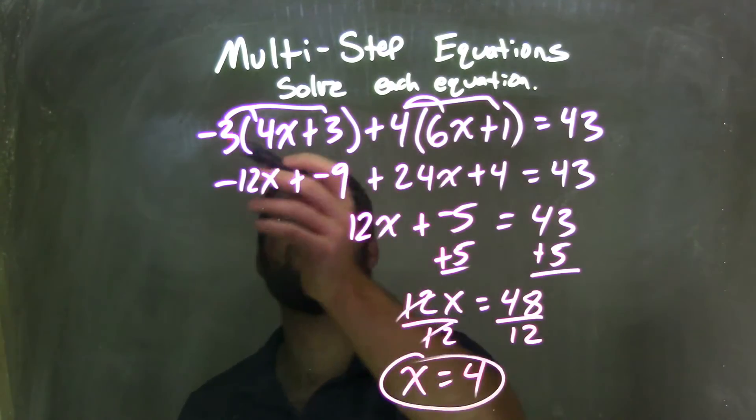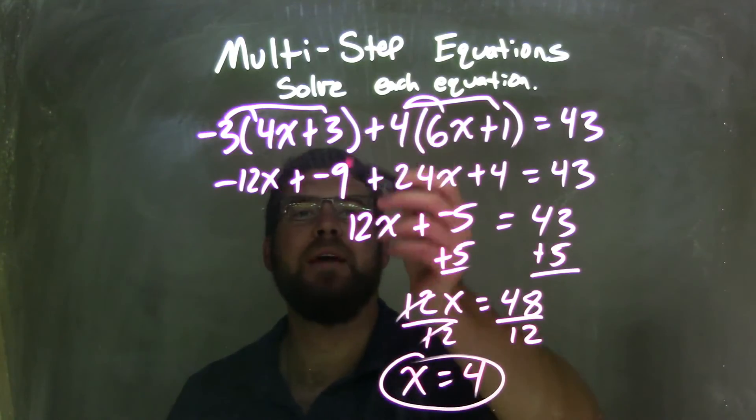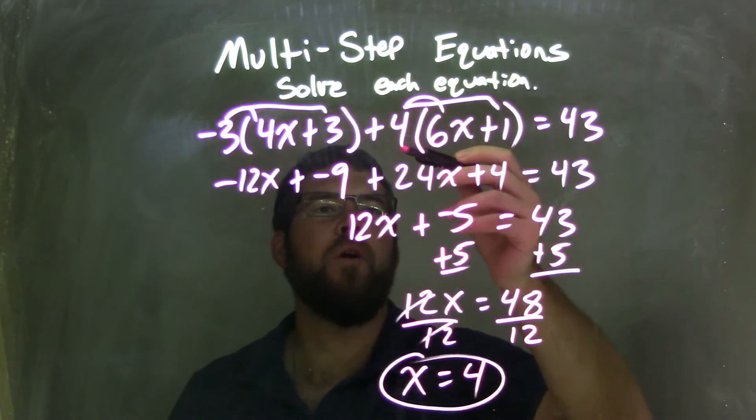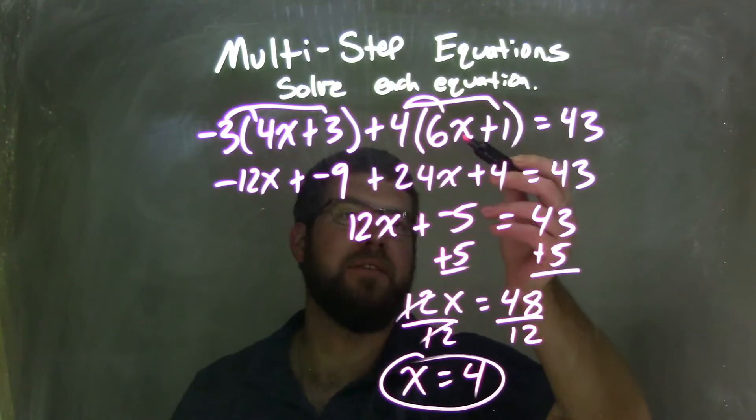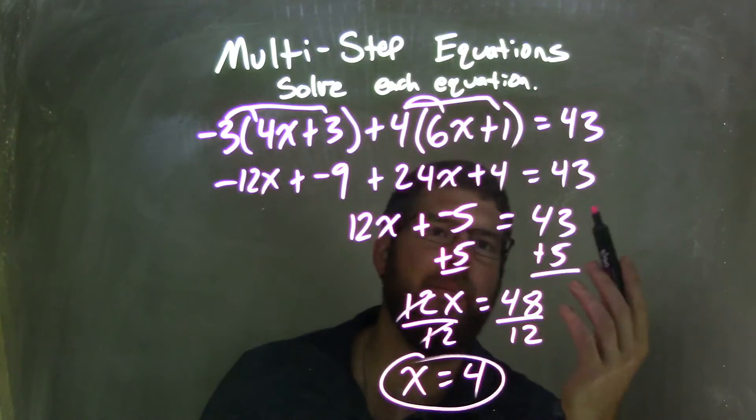Let's recap. I distributed my negative 3 across. Negative 3 times 4x is negative 12, and negative 3 times 3 is negative 9. Distributed the 4: 4 times 6x is 24x, and 4 times 1 is 4. And I brought down the 43.